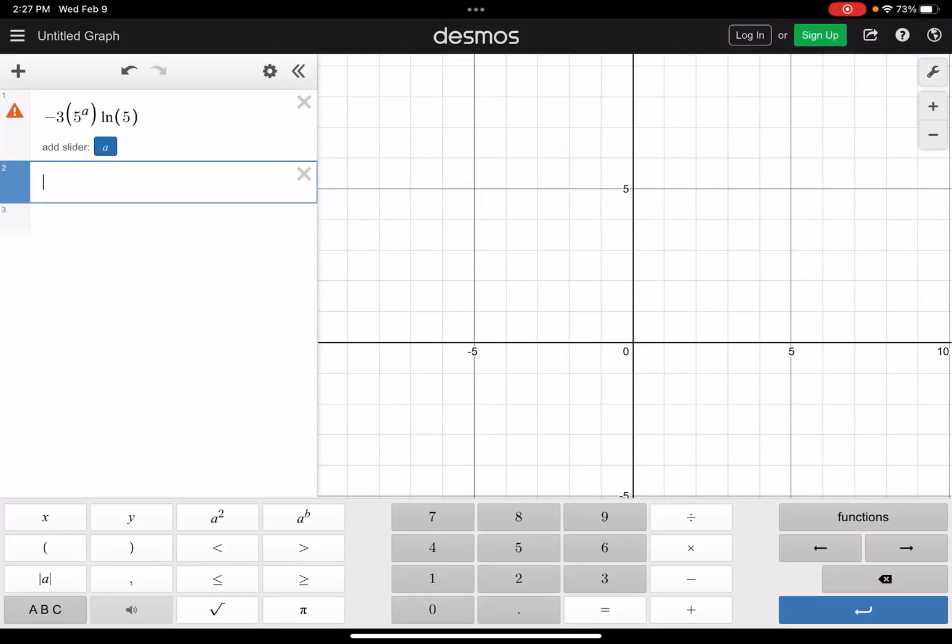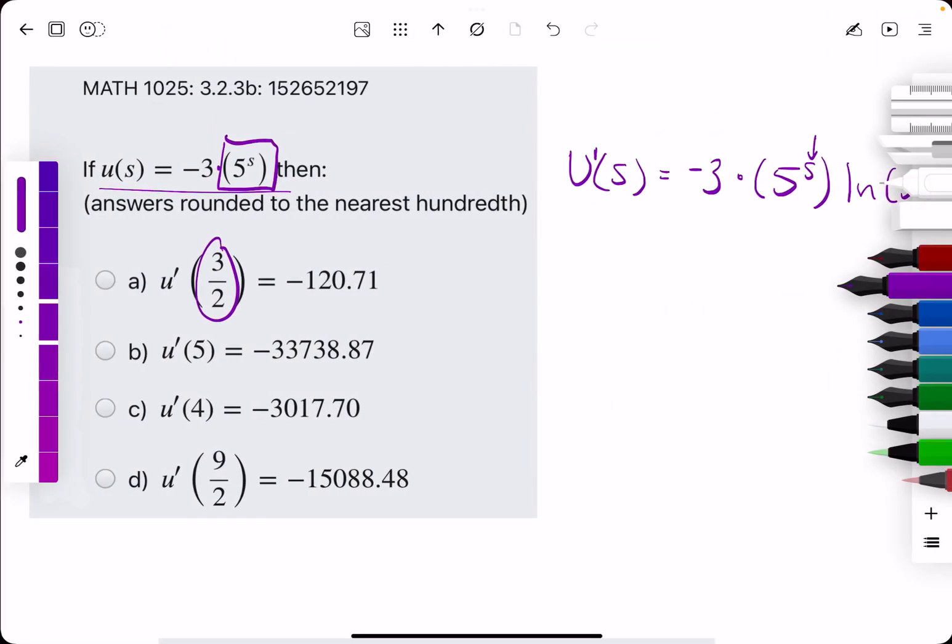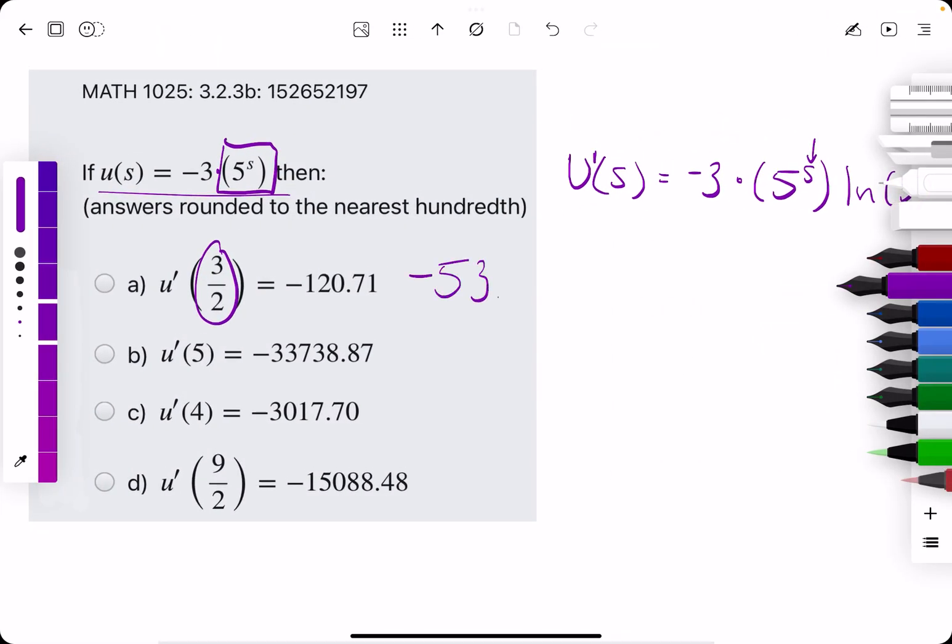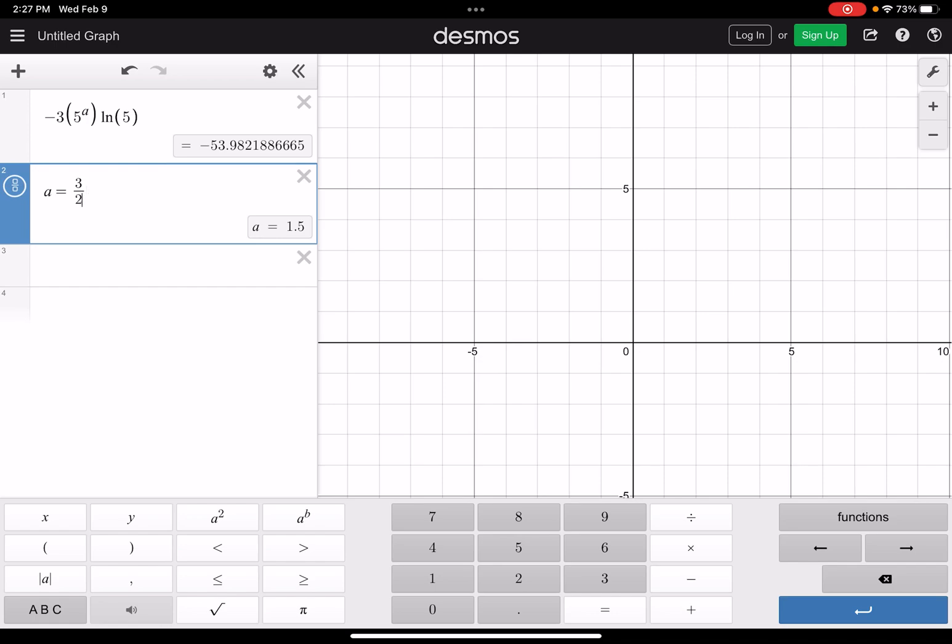And like that, we get negative 53.9. Negative 53.9 does not match negative 120. So we move on to the next one. We substitute a with 5.